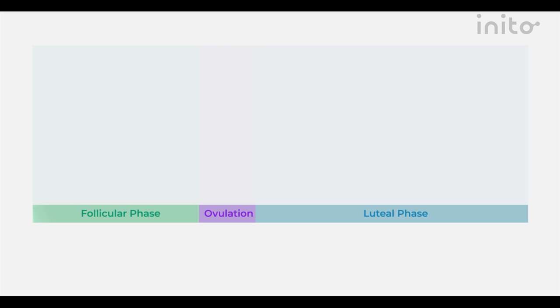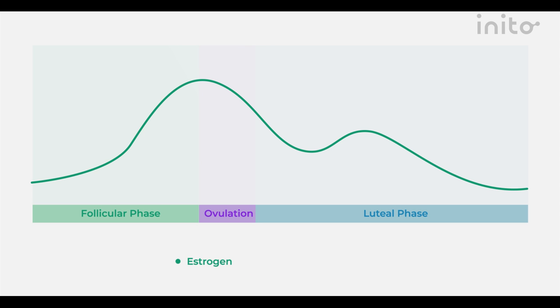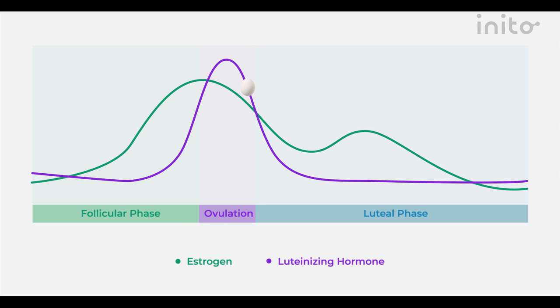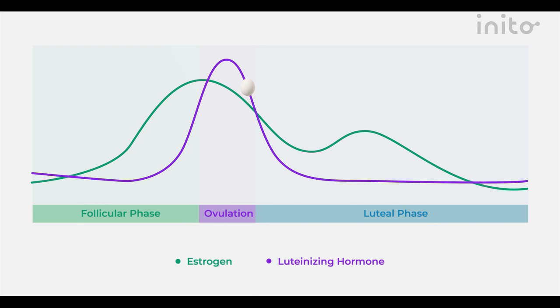Let's take a closer look at your menstrual cycle. Your menstrual cycle has two parts. When you're in the pre-ovulatory phase, or the first part of your cycle, the hormone estrogen is dominant. When estrogen begins to rise, luteinizing hormone — or LH for short — is released by your pituitary gland, which triggers ovulation, which is a fancy term for an egg rupturing outside the follicle.